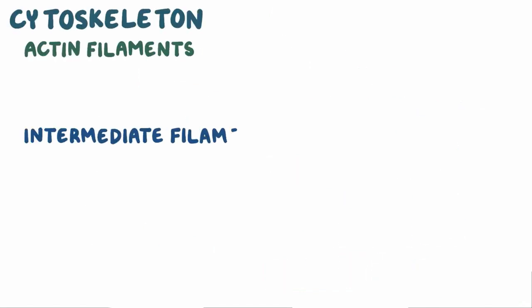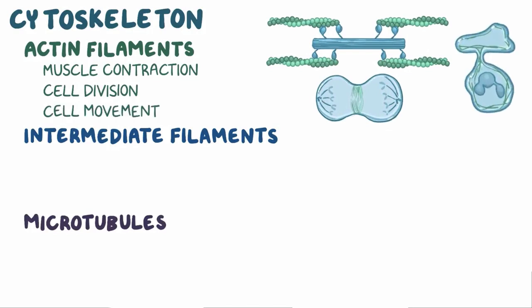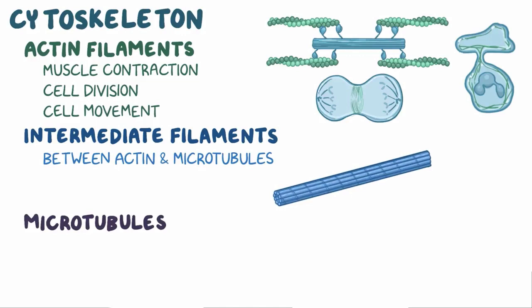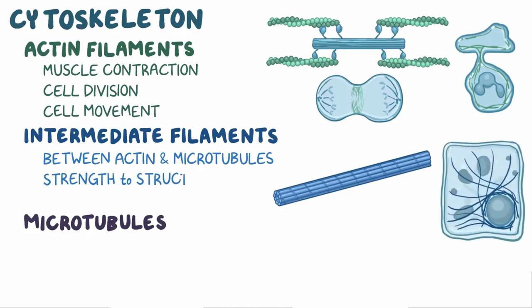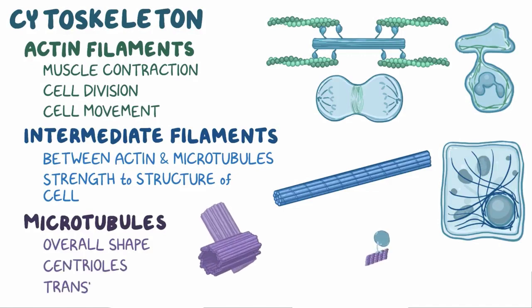As a quick recap, the cytoskeleton is formed by actin filaments, intermediate filaments, and microtubules. Actin filaments are the thinnest and help with muscle contraction, cell division, and cell movement. Intermediate filaments fall between actin filaments and microtubules in diameter and provide strength to the structure of the cell. And finally, microtubules are the thickest of the three — they give cells their overall shape, form centrioles, and help in the transportation of vesicles.